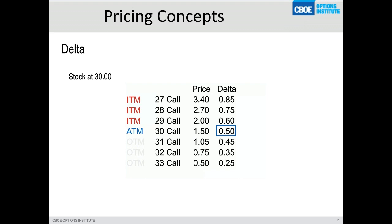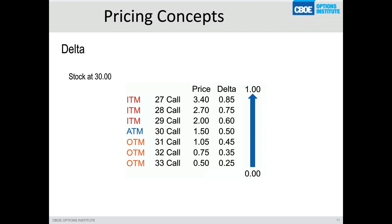Delta as probability is trader talk from the floor here at CBOE. Out-of-the-money calls have a delta less than 50; in-the-money calls greater than 50. If this stock goes from 30 to 31, that at-the-money 30-strike call — we would add 50 cents onto the price of that call. Delta for out-of-the-money options runs from 0 all the way up to 1. We use delta as probability to choose strike prices for various trades.